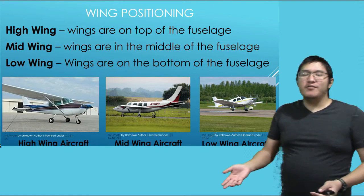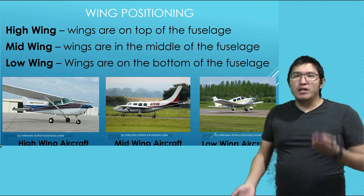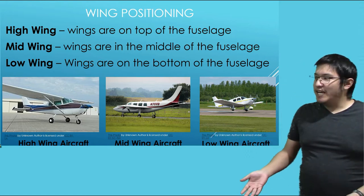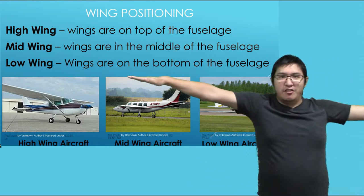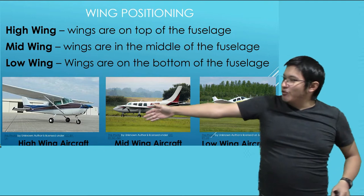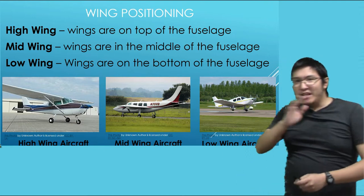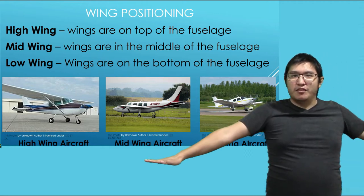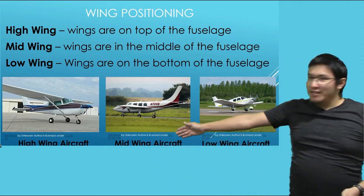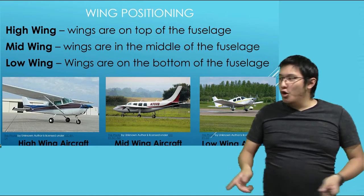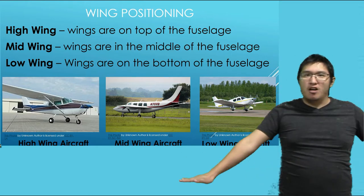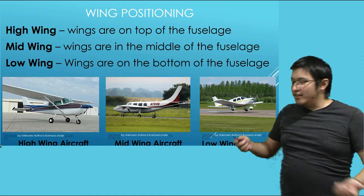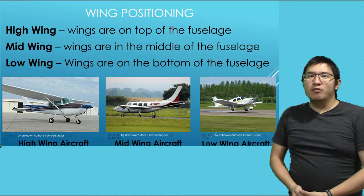We can also classify aircraft depending on where the wing is located relative to the fuselage. For example, high-wing aircraft have the wings on top of the fuselage, like the Cessna 172. Mid-wing aircraft have the wings in the middle of the fuselage. And low-wing aircraft have the wings at the bottom. Each has its own pros and cons, though those are beyond the scope of this lesson.